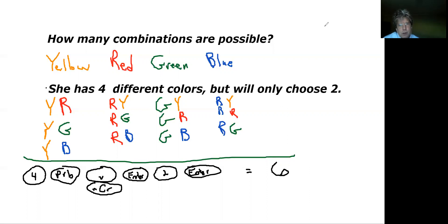Those chairs are in different colors—they're in yellow, red, green, and blue. So she has four different colors, but she's only going to choose two of those colors.